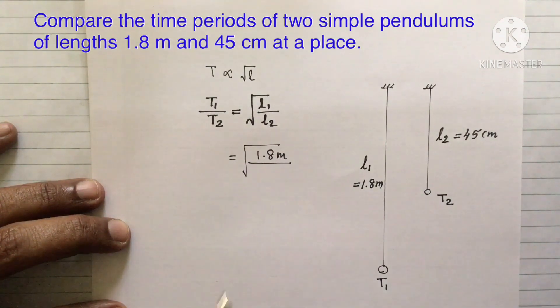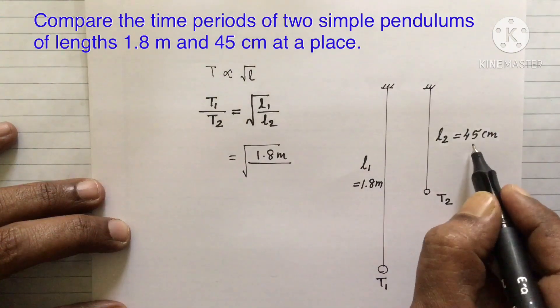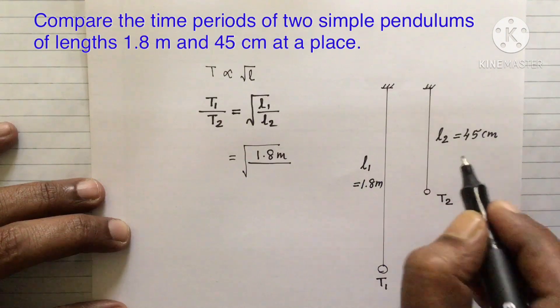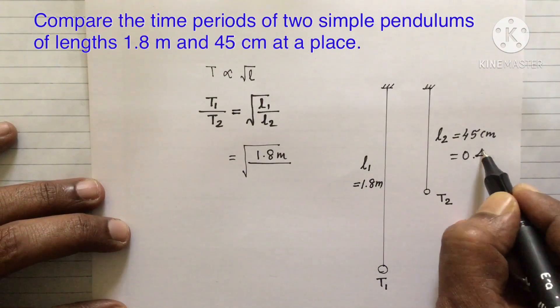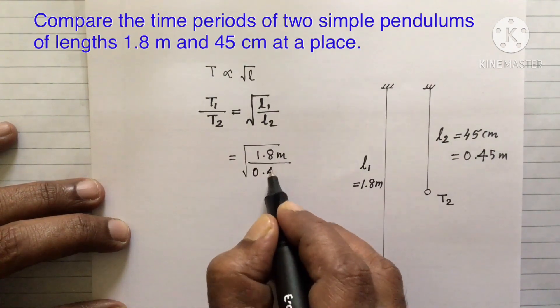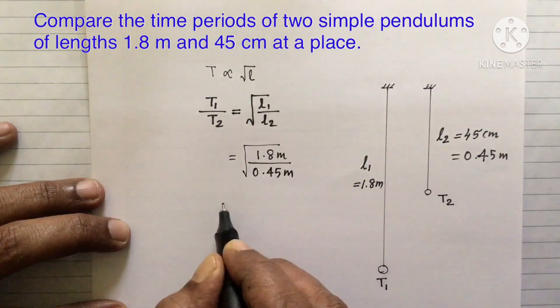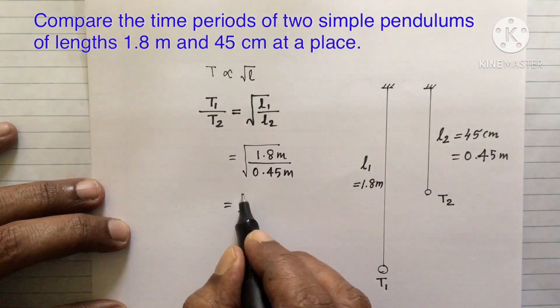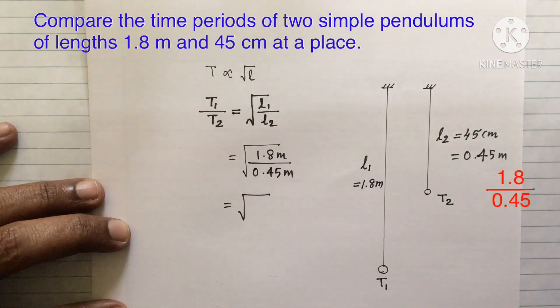There is a small issue. This is in SI system. This one is in CGS system. So I will convert this into SI system. Then it becomes 0.45 meter. So here this is 0.45 meter. So on dividing, what will you get? It is nothing but 1.8 divided by 0.45. That is 180 divided by 45. So you can cancel and you will get 4 by 1.